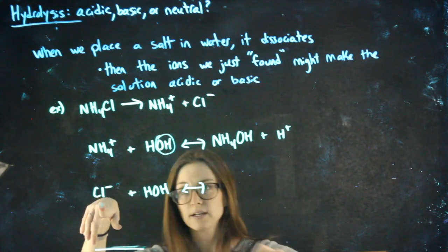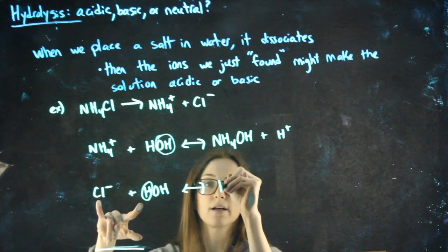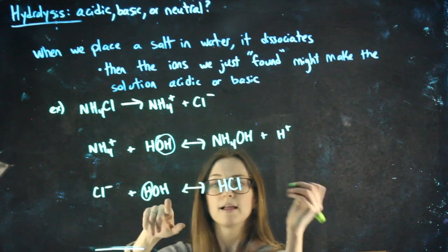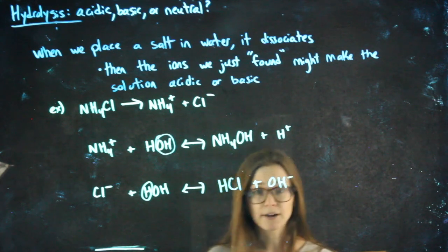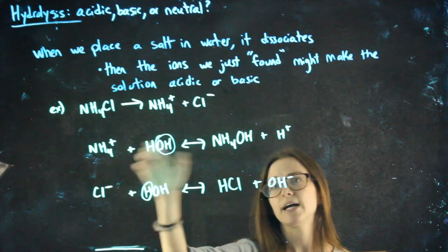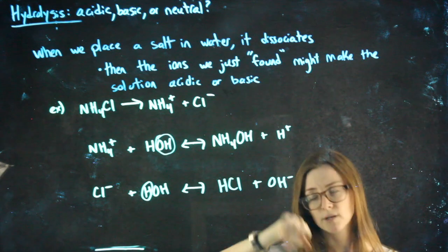The negative ion is going to react with the positive part of water, so H with Cl gets me HCl, leaving OH- left over. And you'll see this pattern, you'll always have the positive ion leaving H+ left over, and the negative ion leaving OH- left over.